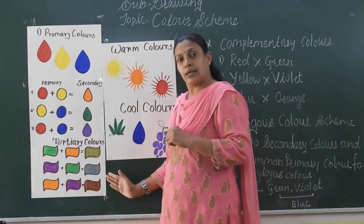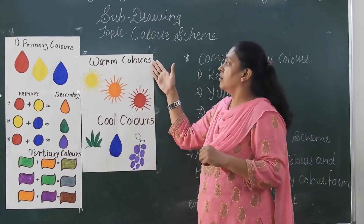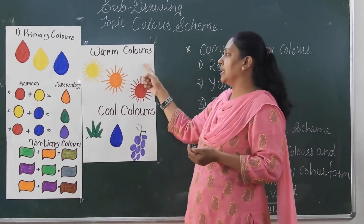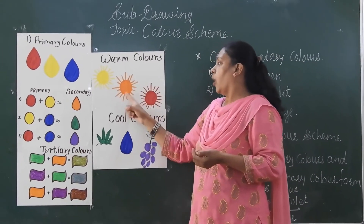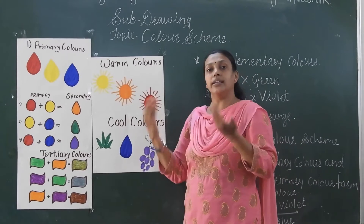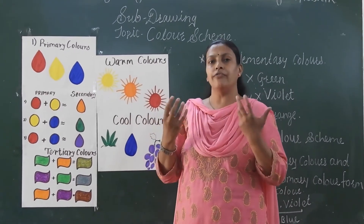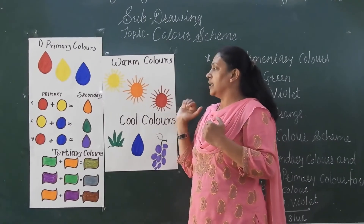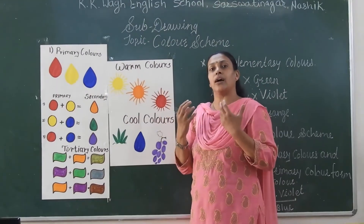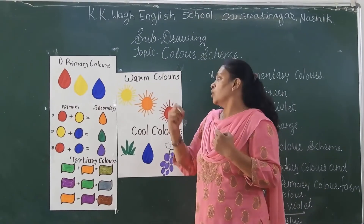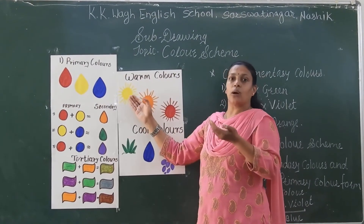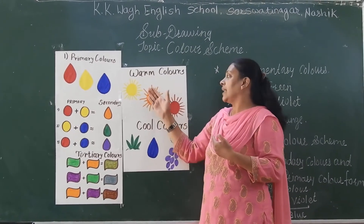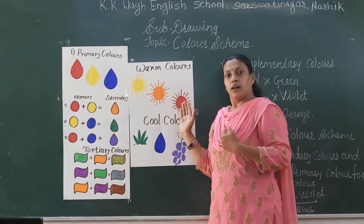Afterward, we are going to learn about warm color scheme and cool color scheme. In the warm color scheme, the colors are yellow, orange, and red. When we look at these colors, we feel warm — like looking at the sun. That is why we call them the warm color scheme.